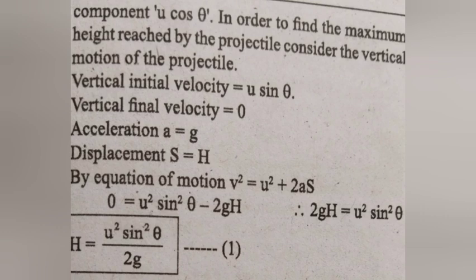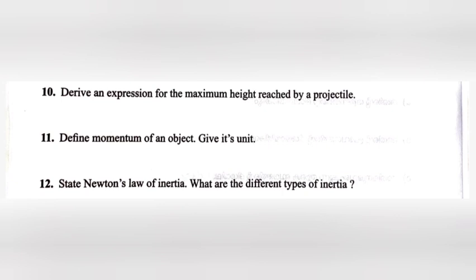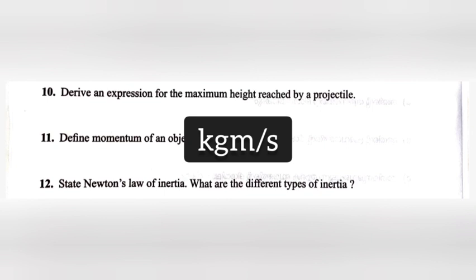Question 11: Define momentum of an object. Give its unit. Answer: Momentum P is equal to mass into velocity, and its unit is kilogram meter per second.